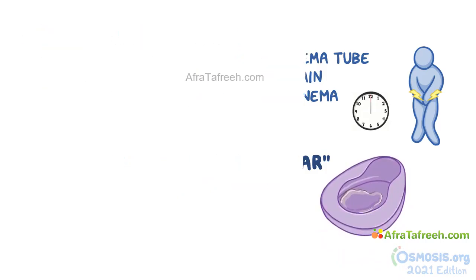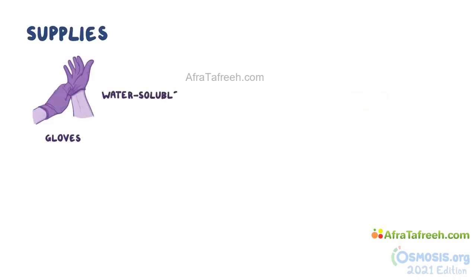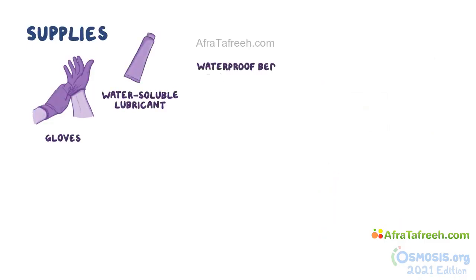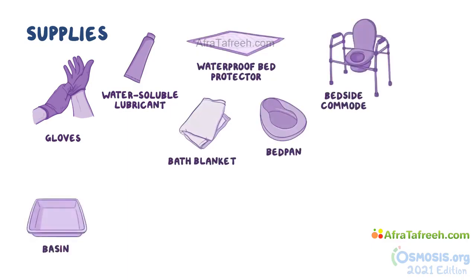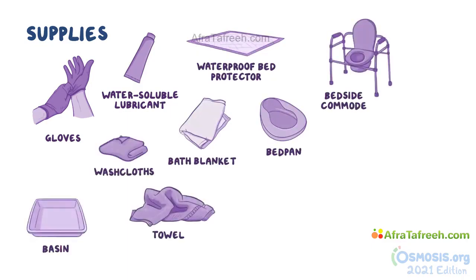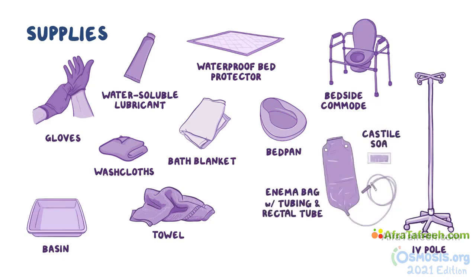To administer the enema, first gather the following supplies: gloves, water-soluble lubricant, waterproof bed protector, bath blanket, bedpan or bedside commode, basin, washcloths, towel, IV pole, enema bag with tubing and rectal tube attached, and a package of Castile soap.